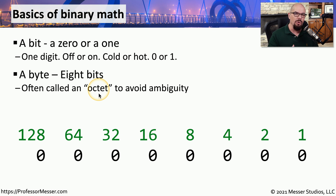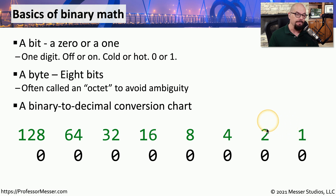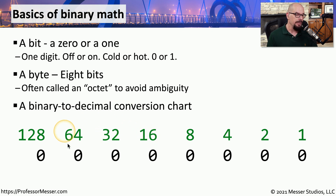To perform all of the conversions we'll do today, we need to make a conversion chart. We'll start on the right side and put the number 1, then double it. If we double 1 we have 2, double 2 we have 4, then 8, 16, 32, 64, and 128. This allows us to perform any type of binary calculation, and will be very handy when we start doing more IP subnetting.